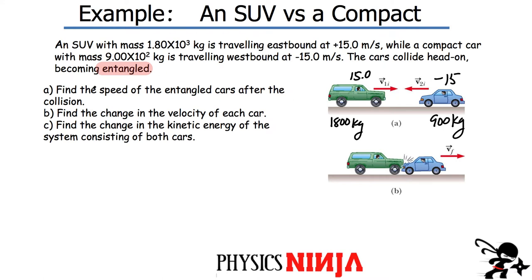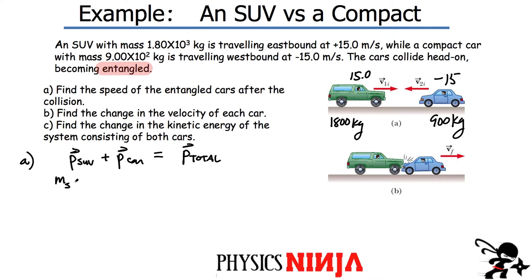Find the speed of the entangled cars after the collision. This is a conservation of momentum problem. For Part A, let's look at the total momentum before the collision: momentum of the SUV plus the momentum of the car equals the total momentum after. After the collision there's only one term. For the car, since it's traveling in the opposite direction, we use a negative sign. The total mass is SUV plus car, all traveling together at one final speed v_final.